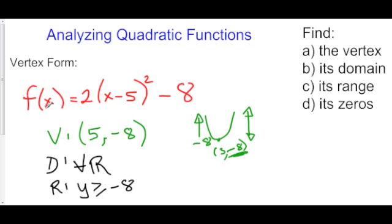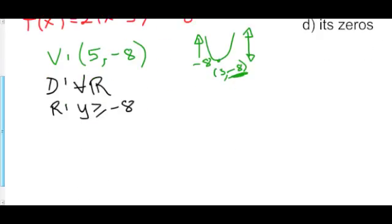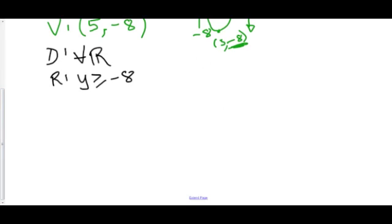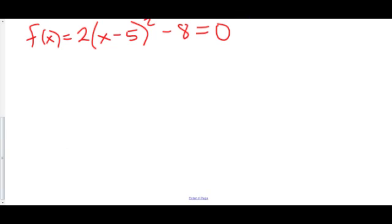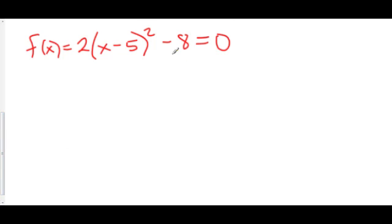Now, the next part of this is to find the zeros of this parabola. And the zeros of a function are where the function is equal to 0. So all we're going to do is we're going to take our function f of x, which is equal to 2 times x minus 5 squared minus 8. And we're going to set this equal to 0. Because that's how you find the zeros. You set your function equal to 0. We'll add 8.